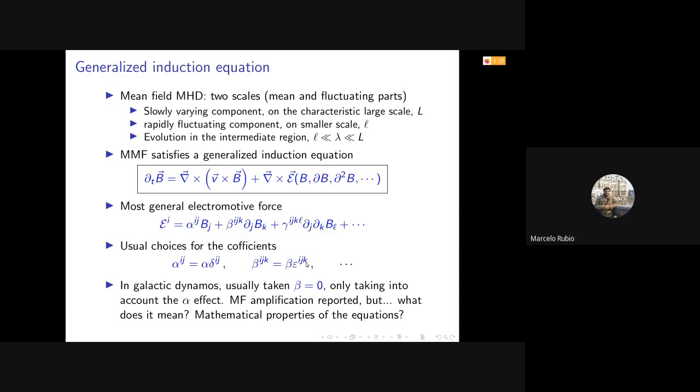For example, for galactic dynamos, there are some works in which people directly consider the simplest of this electromotive force: one that is linear with the magnetic field, and no derivatives of the magnetic field contributions are present in this simplest choice. People usually take this into account in order just to analyze the alpha effects, and they report magnetic field amplification. But the question we have with Fede is: what does it mean if we take this magnetic induction equation in this very simplest rendition when the electromotive force is linear in the magnetic field?